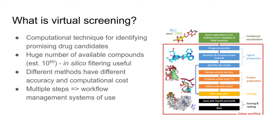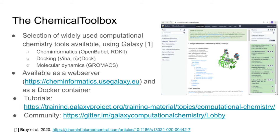Because there are multiple steps involved, workflow management systems can be very useful. One which is most often used is KNIME. The implementation I'm going to discuss here is done in Galaxy, though I'm also aware of projects using CWL or Nextflow. The platform we've created and used for this project is called the Chemical Toolbox — essentially an implementation of the most widely used computational chemistry tools into Galaxy, including basic cheminformatics tools using the open-source toolkits OpenBabel and RDKit, various molecular docking software, and tools for molecular dynamics using GROMACS.